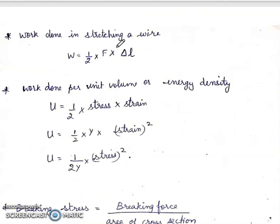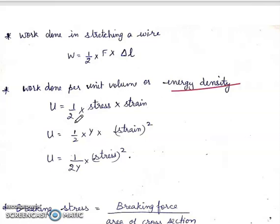Work done in stretching a wire is given by W is equal to half into force into extension, that is half into F into delta L. Work done per unit volume, or energy density of the wire, is given by U equal to half into stress into strain. Also, U is equal to half Y strain squared, or U is equal to stress squared by 2Y. There are three formulas of energy density.